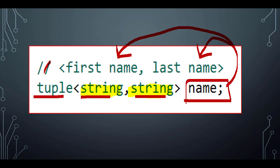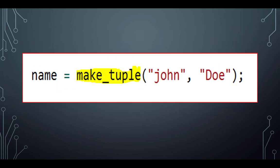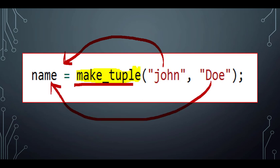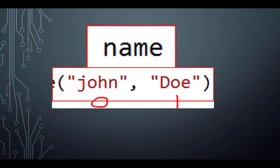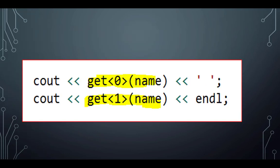Notice — this is a comment — the variable 'name' does not know that this is the first name or the last name. There are no names here whatsoever. Now let's fill it with data. When I say make_tuple, it takes the string 'John' and the string 'Doe' and puts them inside 'name'. So 'name' has two pieces of data: item zero and item one. To print them out, you say get<0>(name) and get<1>(name).